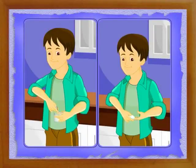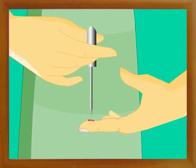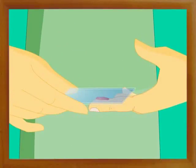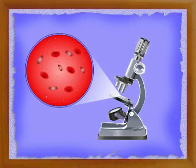Clean a needle and the tip of your finger with alcohol. Prick your finger with the needle, spread out one drop of blood on a glass slide, and observe the various cells of blood under a powerful microscope.